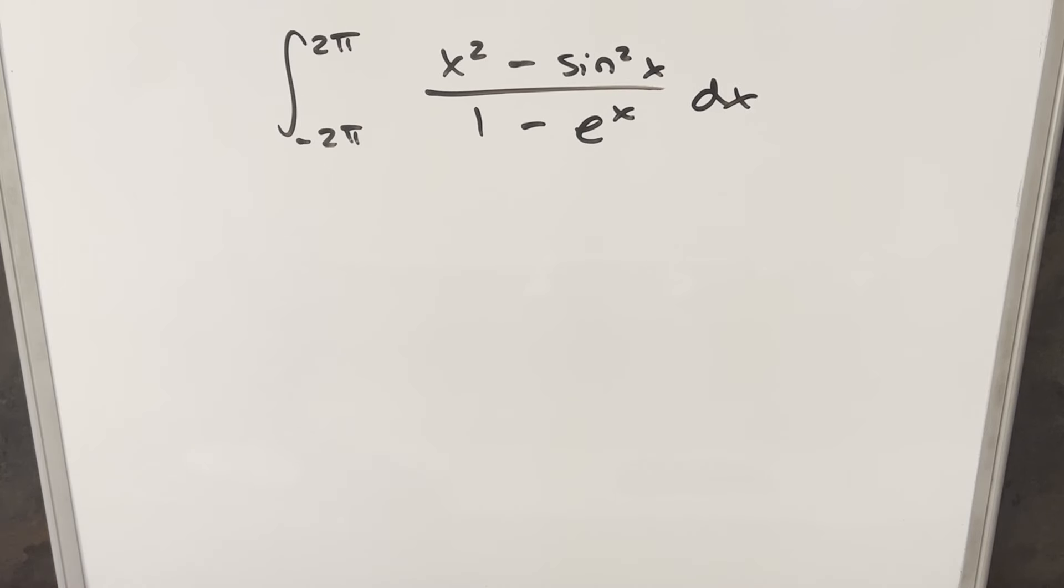Okay, we have a pretty tricky looking integral. We've got the integral from -2π to 2π of (x² - sin²x)/(1 - e^x) dx.